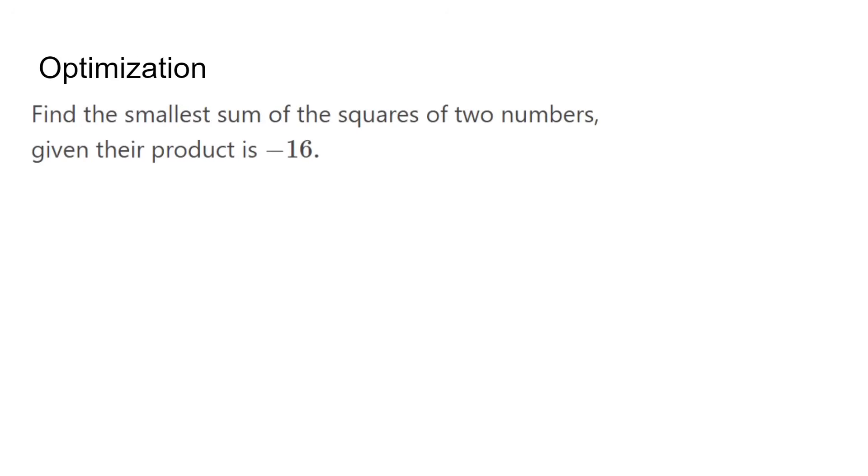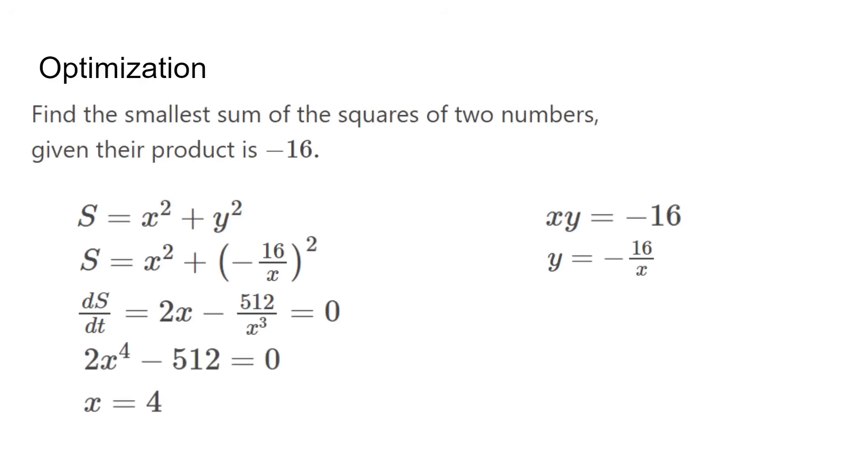The last topic is applying the concept of minimums to optimization problems, which commonly ask for the highest or lowest of a function. This example asks for the minimum of the sum, so we first write it out as x squared plus y squared. Next, it also gives the product, so xy equals negative 16. From the product equation, we get y equals negative 16 over x and substitute it inside. We want to minimize the sum, so we derive it and set it equal to 0. Multiply each side by x cubed and then we solve for x. We get 4 and use the product to find y equals negative 4.